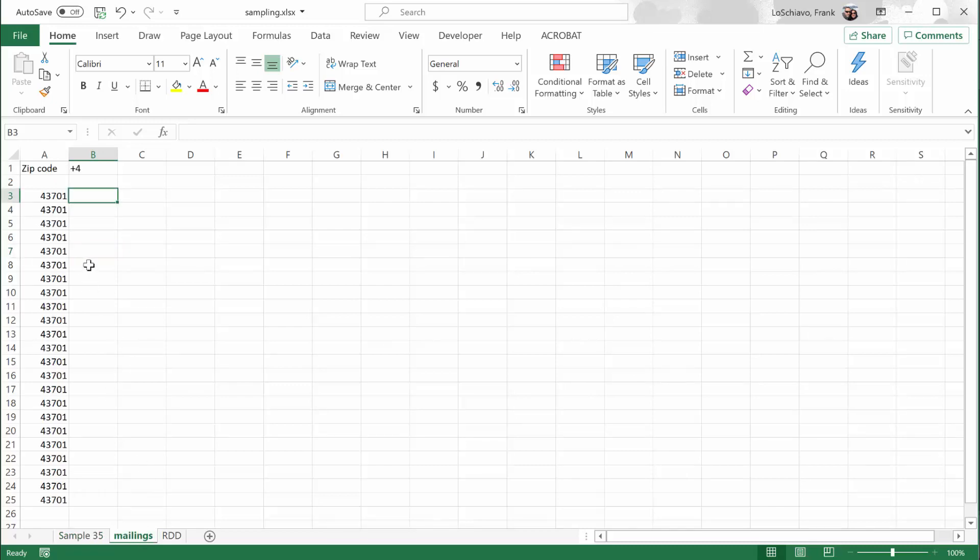Look at this sheet right here. Let's just say that a researcher already found this zip code 43701, which is Zanesville. And they decided that Zanesville is going to get at least a few of these random mailings.